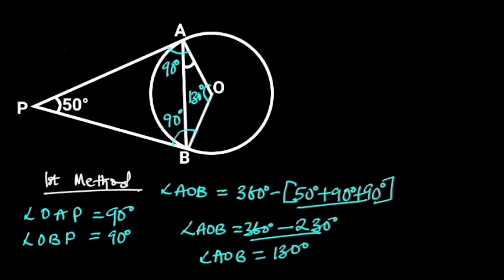Next, let's consider triangle AOB. In triangle AOB, OA and OB are radii of the circle. This shows that triangle AOB is an isosceles triangle, and it follows that angle OAB is equal to angle OBA. Reason: base angles of an isosceles triangle are equal.